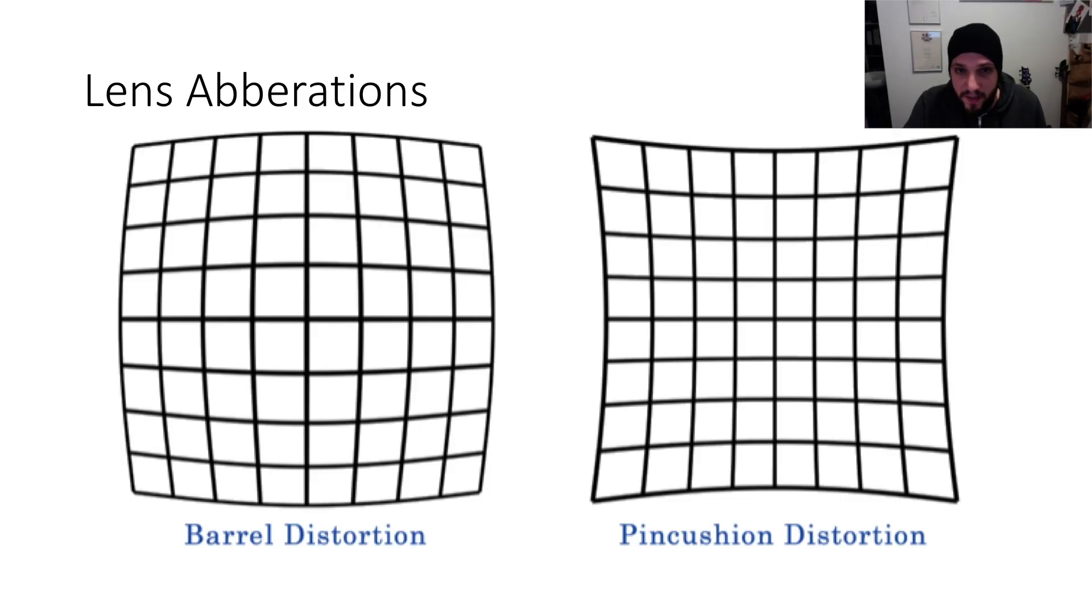So first, we start with barrel distortion, where a straight line appears curved as the line moves away from the center. We see that the lines will curve away from the center, such that a straight line above the center will be curved with the focal point below that line, and a straight line below the center will appear curved with the focal point above the line.